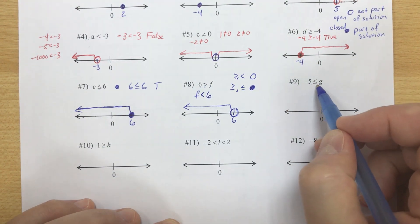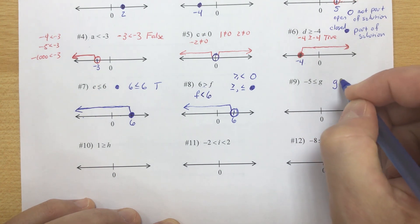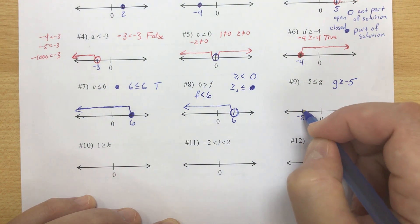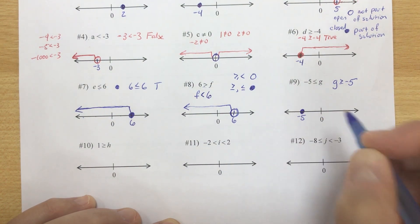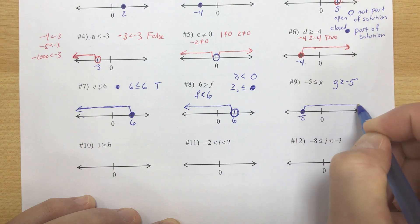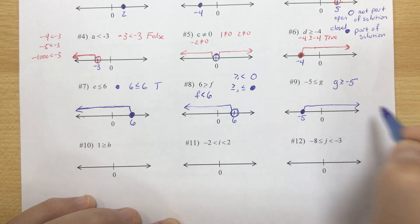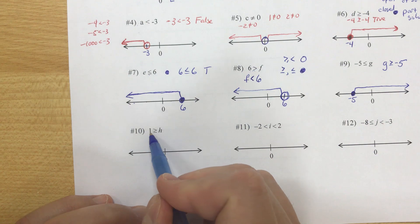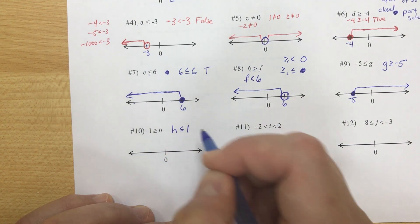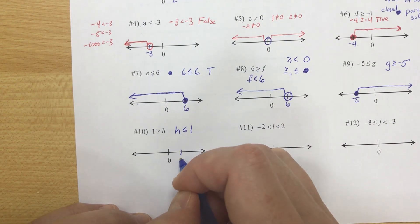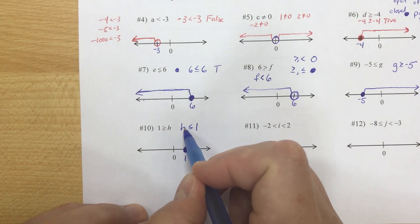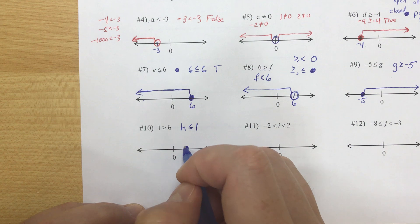Number 9: negative 5 is less than or equal to g — the same thing as g is greater than or equal to negative 5. So we go to negative 5, close the circle, and the arrow goes to the right. Number 10: 1 is greater than or equal to h — same as h is less than or equal to 1. Here's positive 1, closed circle, and all values less than 1 go to the left.